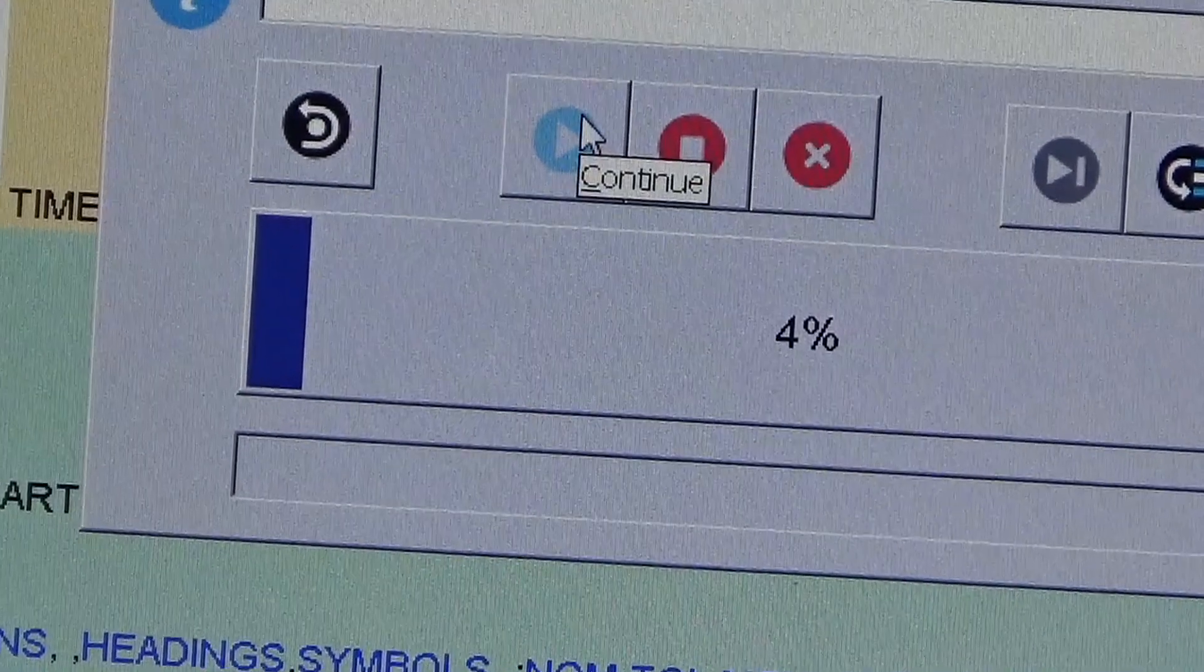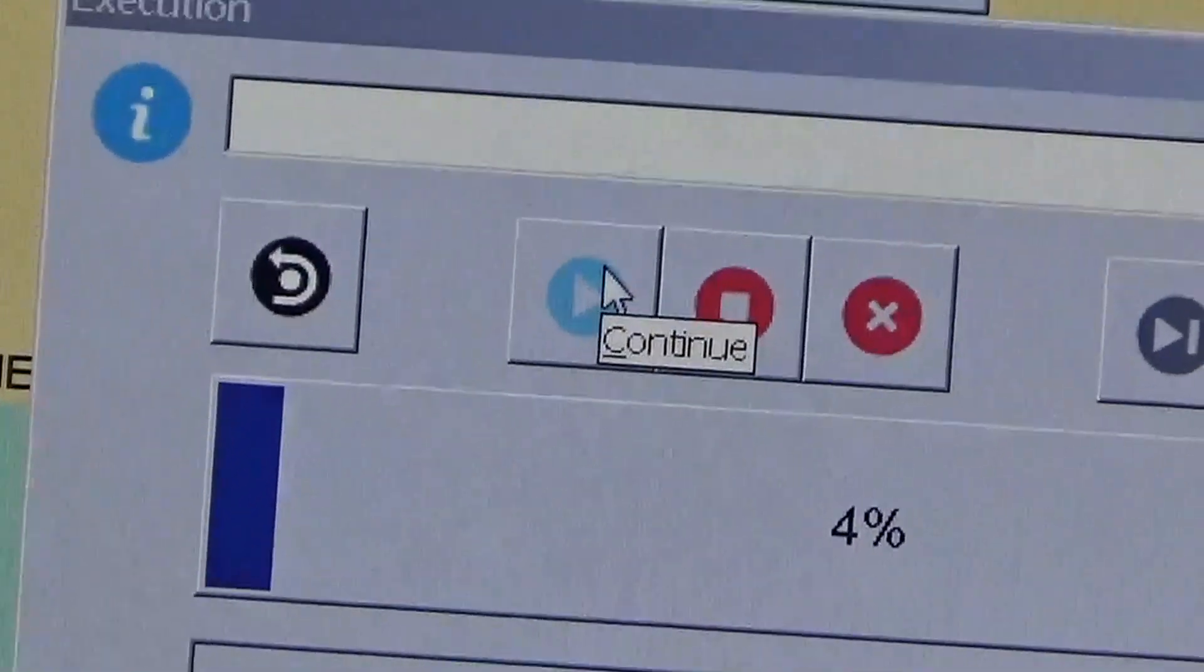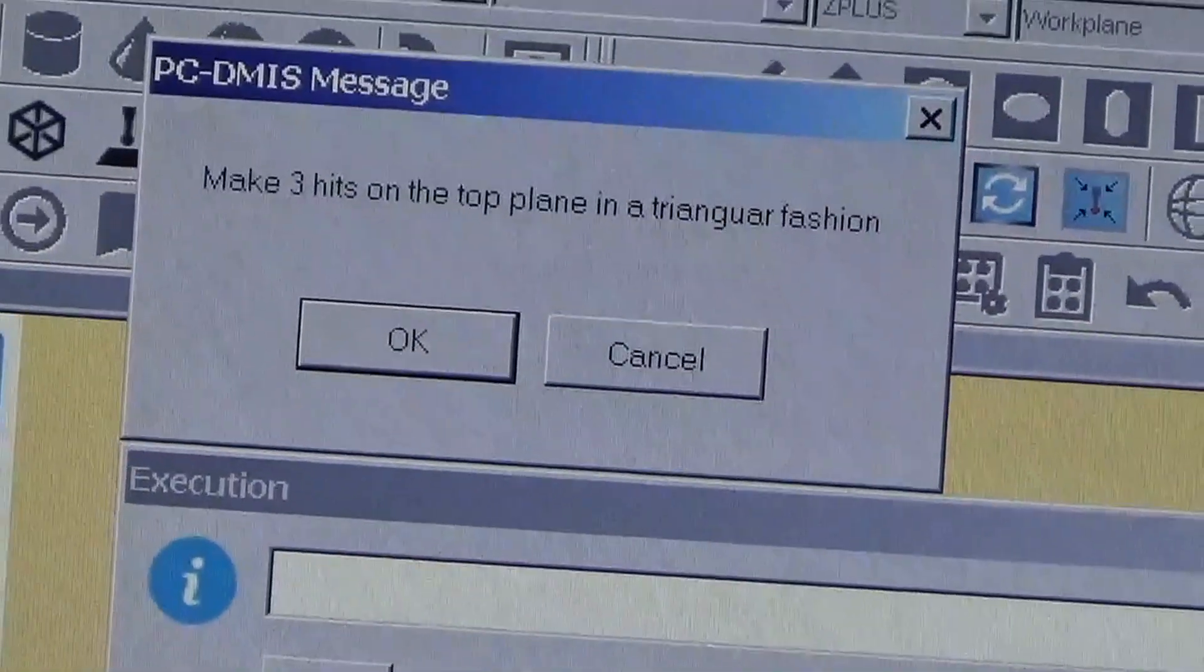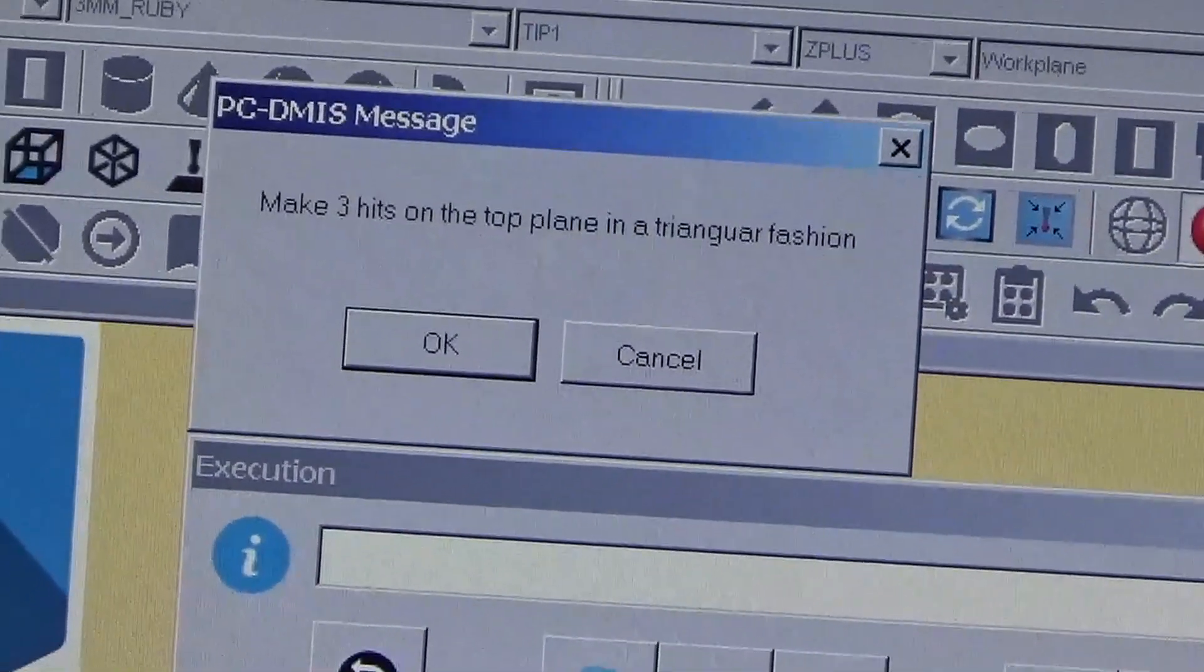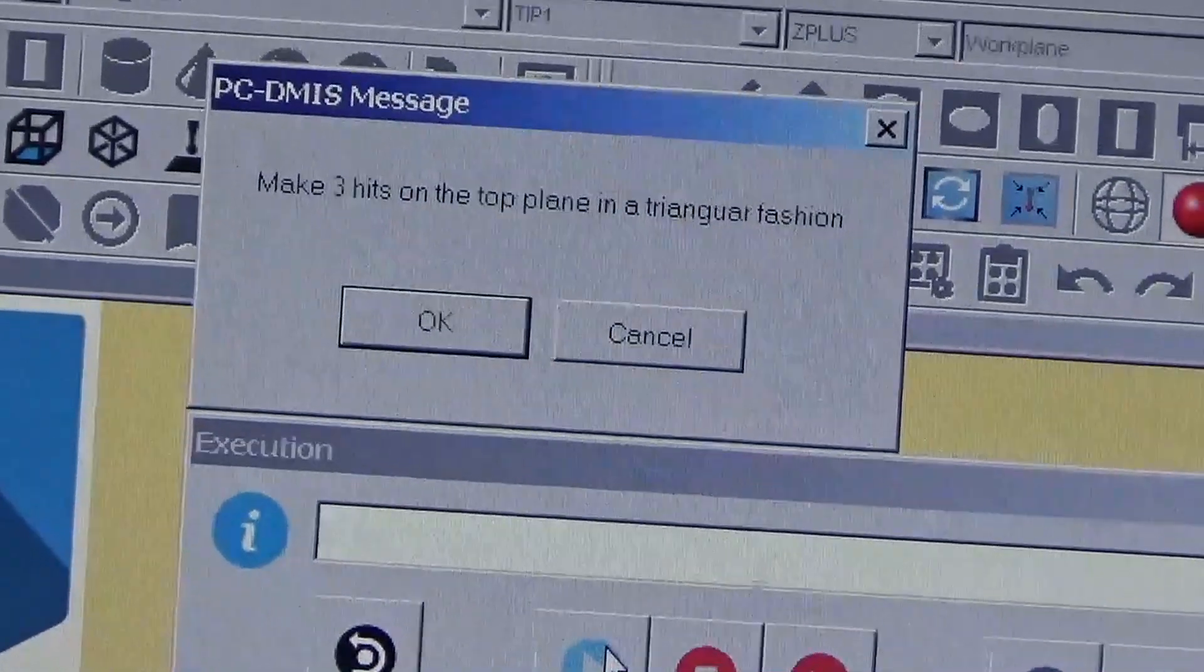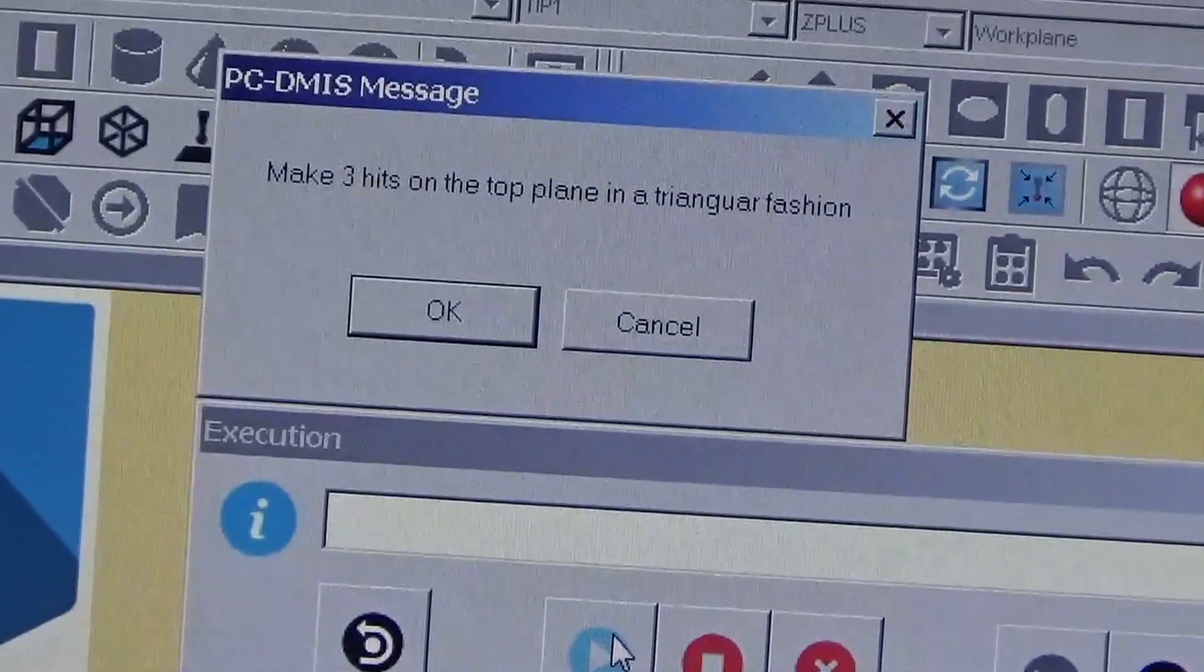And this is actually a little bar that's going to show you the progress through the program, the execution. And above it we have this message here that says make three hits in the top plane in a triangular fashion. This is an operator comment.